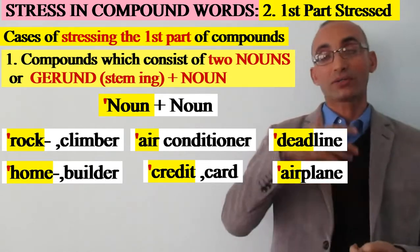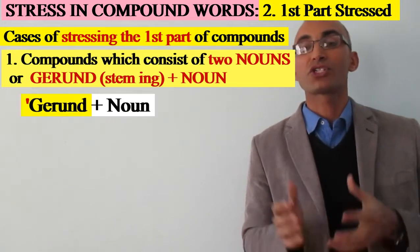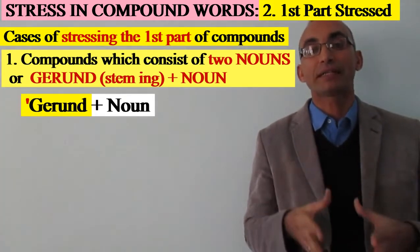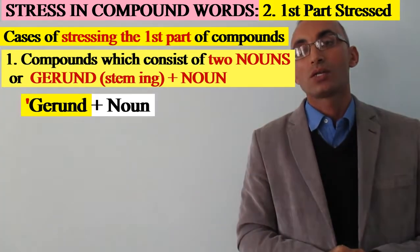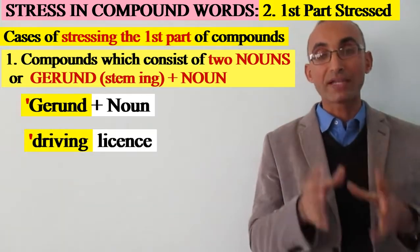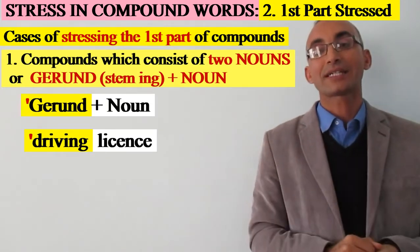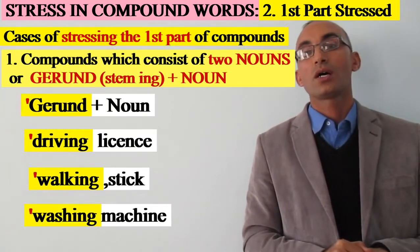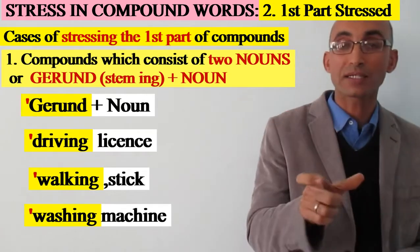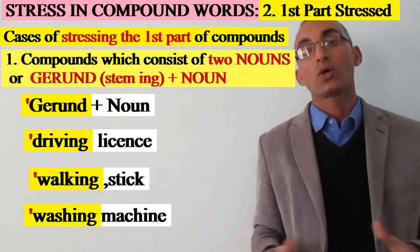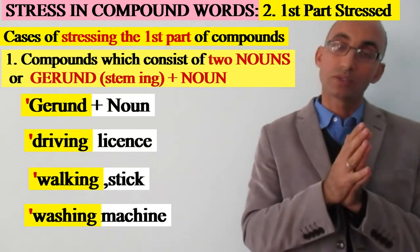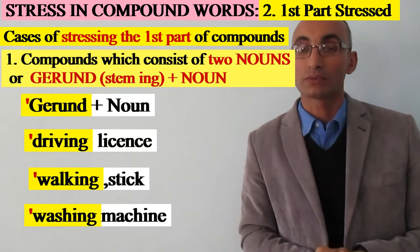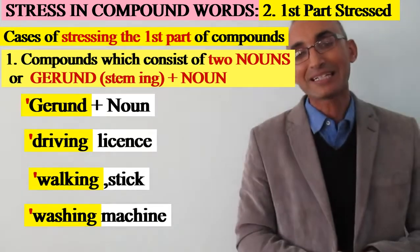For the structure gerund plus noun, the same rule applies — we always stress the first part. For example, 'driver's license': stress 'driving'. 'Walking stick': we stress the first part. 'Washing machine': we stress 'washing', the first part. So in compound nouns — noun plus noun or gerund plus noun — we always stress the first element.